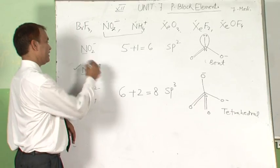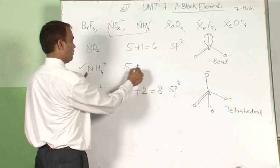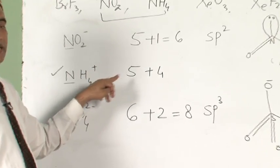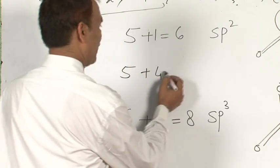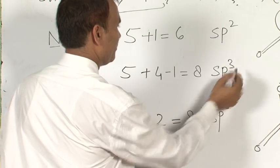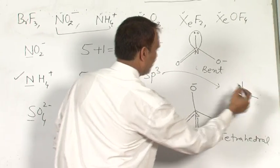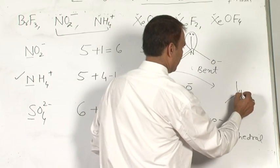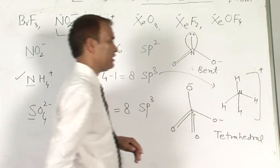Now, here is the case of the positive ion NH4+. Nitrogen belongs to group 15, so 5 electrons, plus 4 bonded atoms: 5 plus 4 is 9, minus 1 for the positive charge, that is 8. 8 means sp3. sp3 means tetrahedral structure. And there should be 4 bonded atoms — already 4, so no lone pair of electron. Structure: nitrogen with H, H, H, H, and a positive charge. This is tetrahedral.